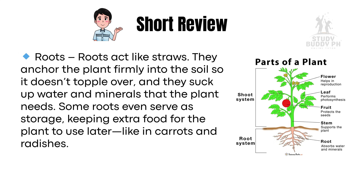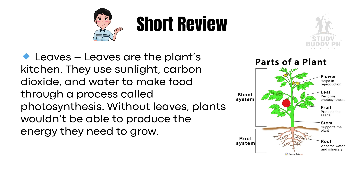Roots act like straws. They anchor the plant firmly into the soil so it doesn't topple over, and they suck up water and minerals that the plant needs. Some roots even serve as storage, keeping extra food for the plant to use later, like in carrots and radishes. Leaves are the plant's kitchen. They use sunlight, carbon dioxide, and water to make food through a process called photosynthesis. Without leaves, plants wouldn't be able to produce the energy they need to grow.